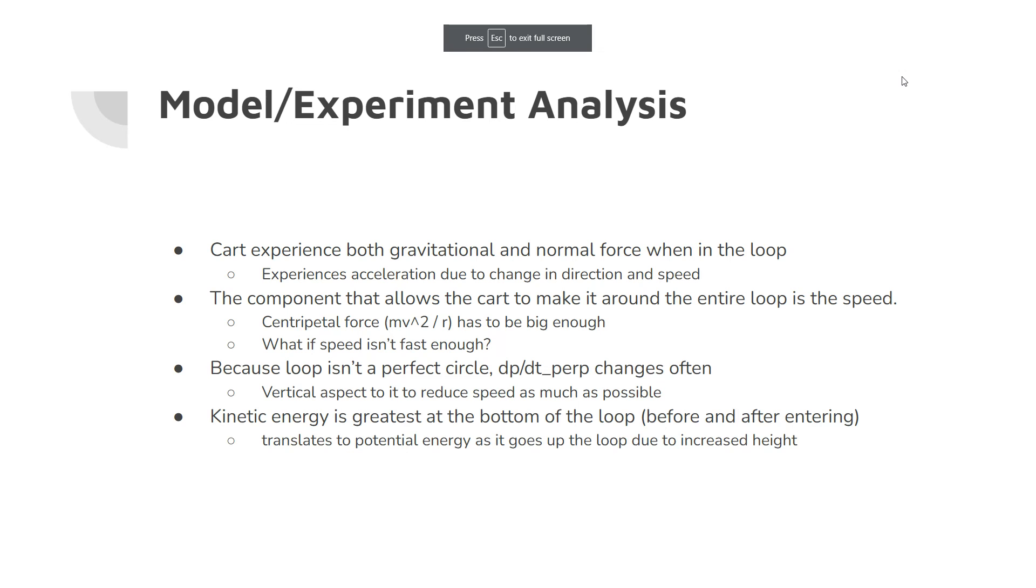I guess the model-slash-experimental analysis is that the cart experiences both gravitational force and the normal force when in the loop. Of course, the acceleration, it experiences acceleration and change in speed due to the change in direction and speed. Obviously, the parallel component obviously changes because the direction is always changing. And the speed, because of how gravity works, it's going to keep decreasing in speed as it goes up the loop.